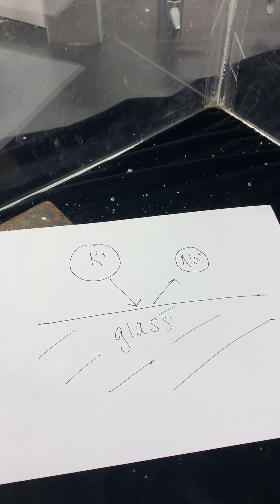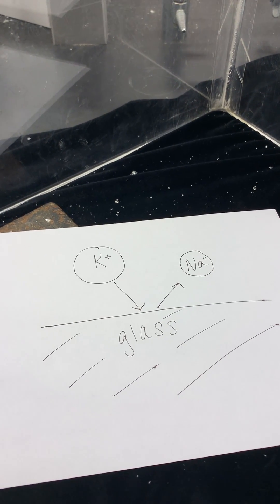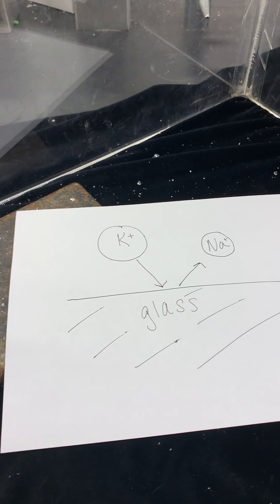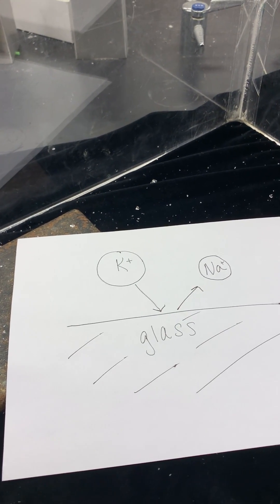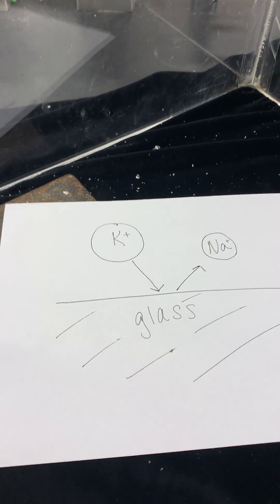This is called ion exchange, which can be used to observe the same phenomena as before. Ion exchange is a chemical strengthening process where the large ions replace the small ions to create that state of compression.